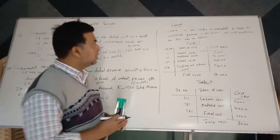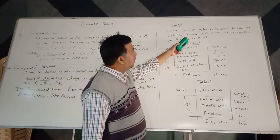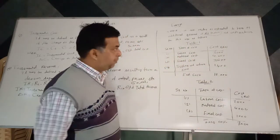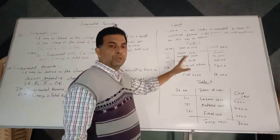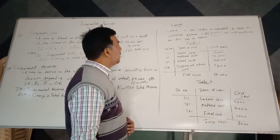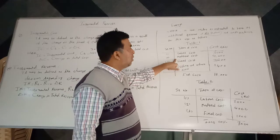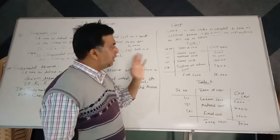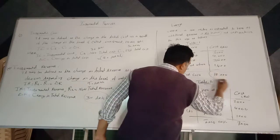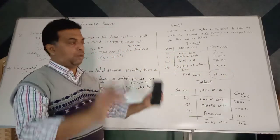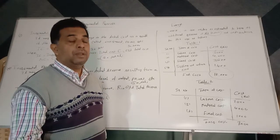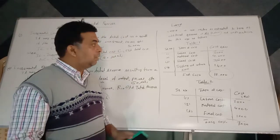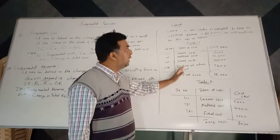Suppose a new firm order is estimated to bring additional revenue of Rs. 10,000. The associated costs are: labor costs Rs. 3,000, material costs Rs. 4,000, fixed costs Rs. 3,600, and selling and administrative costs Rs. 1,400 — totaling Rs. 12,000. Since total cost of Rs. 12,000 exceeds revenue of Rs. 10,000, under the traditional approach the firm would reject this order because full cost is greater than revenue.